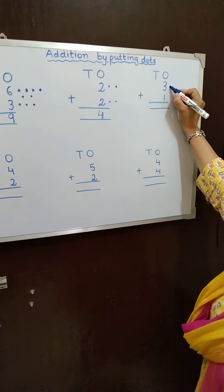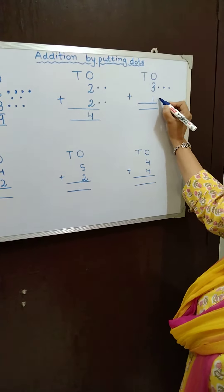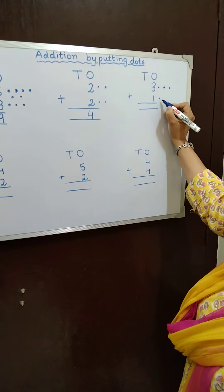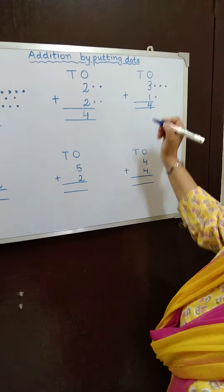3. So how many dots? 3. 1, 2, 3. 1. 1, 2, 3, 4. So I will write here 4.